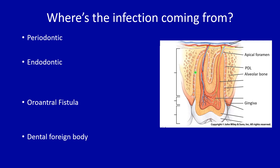There are four general causes of odontogenic sinusitis. First is periodontitis, referring to inflammation or infection in the gum line, the bone, or the periodontal ligament space, and that can allow spread through the bone and into the maxillary sinus.